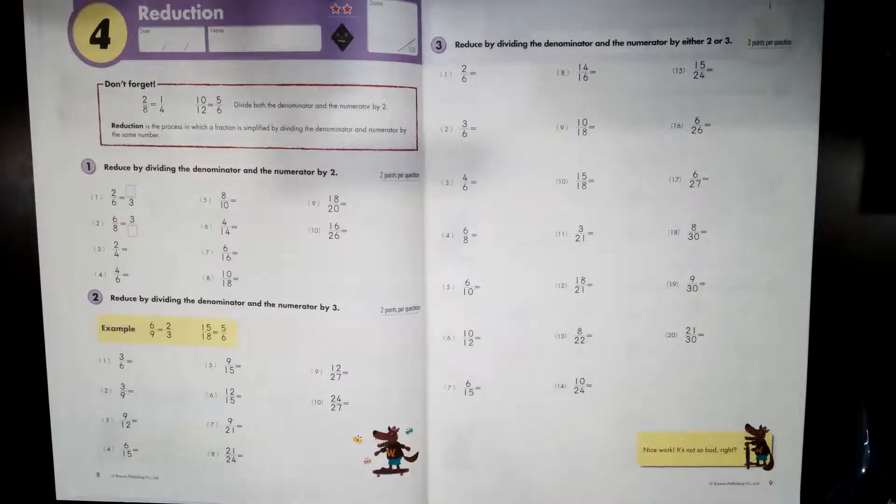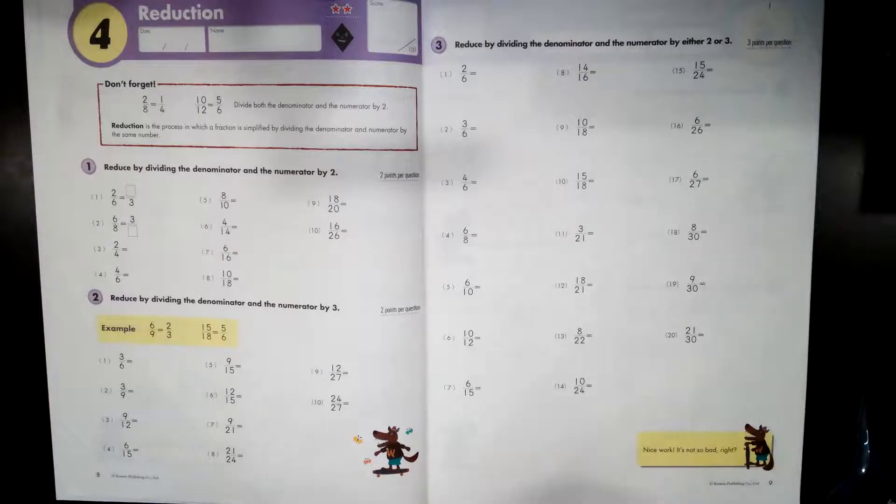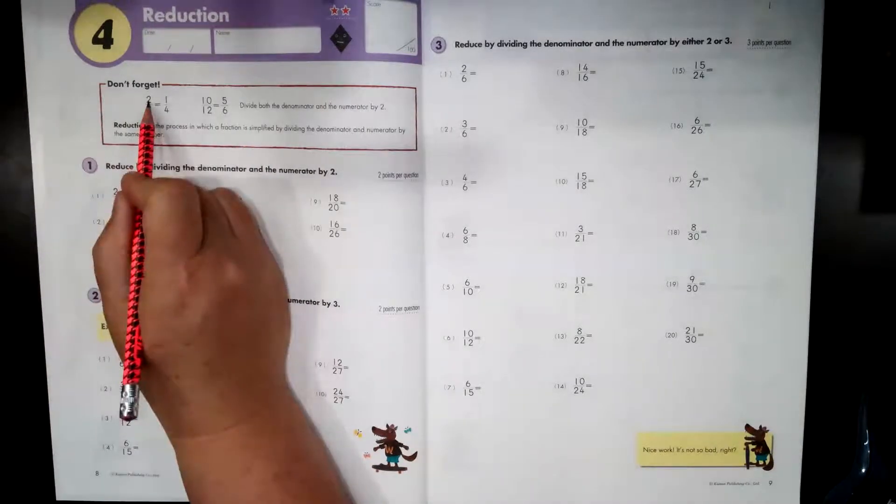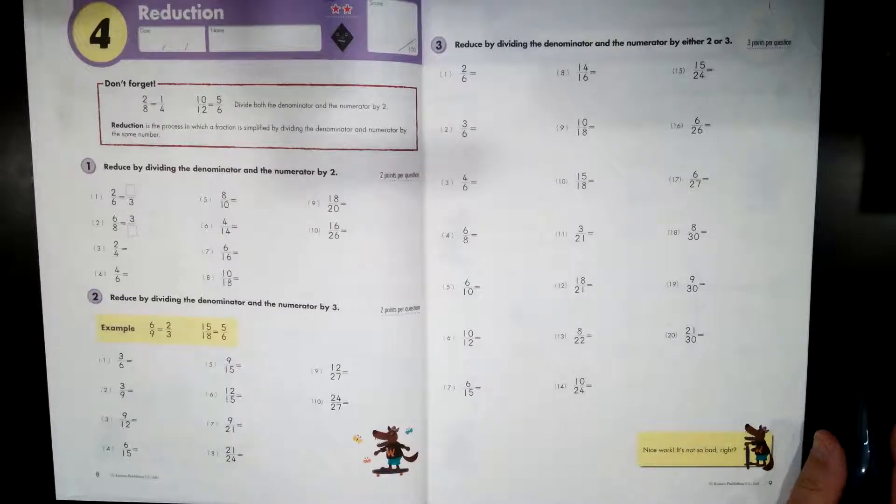To reduce a fraction, you need to make it be the same, but the number looks different. So let's talk about what that looks like. We're going to look at this idea of two eighths and one fourth real quick. Let me draw a quick model for you.